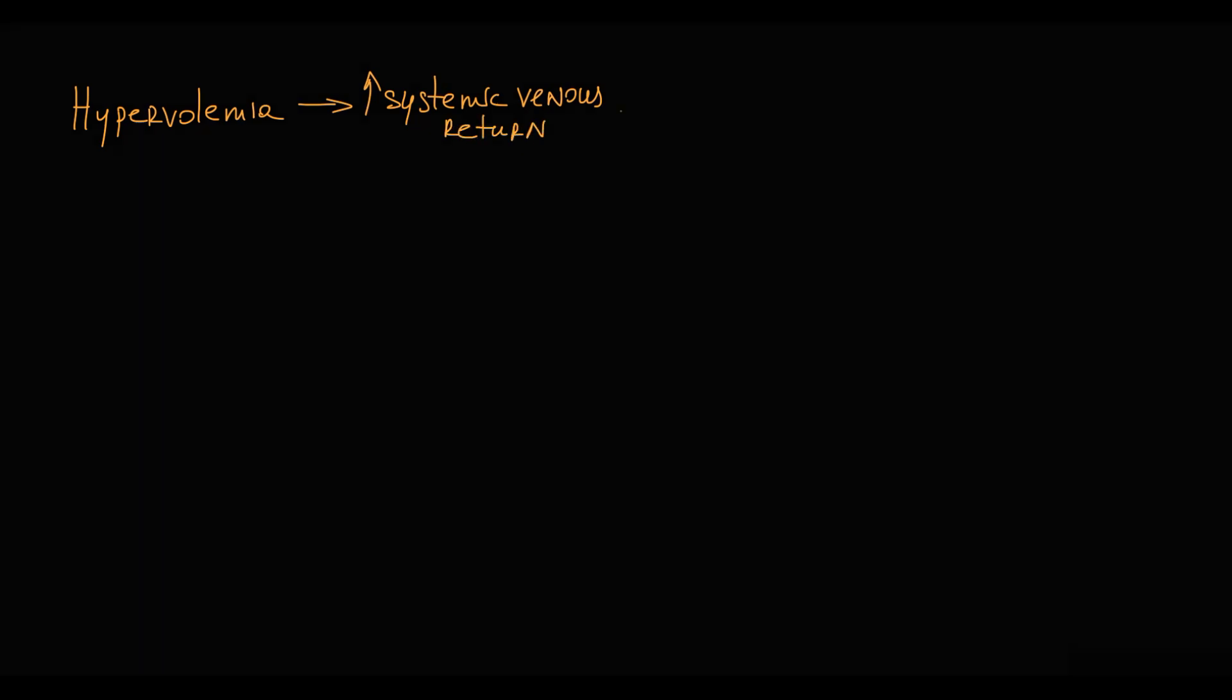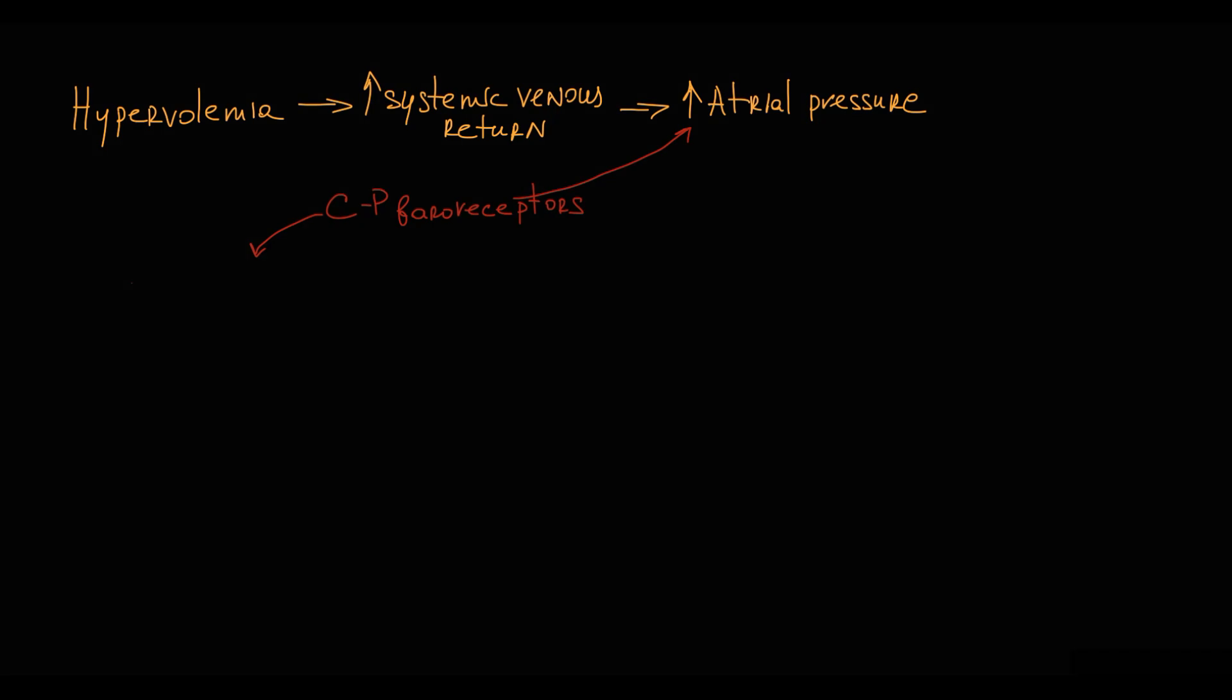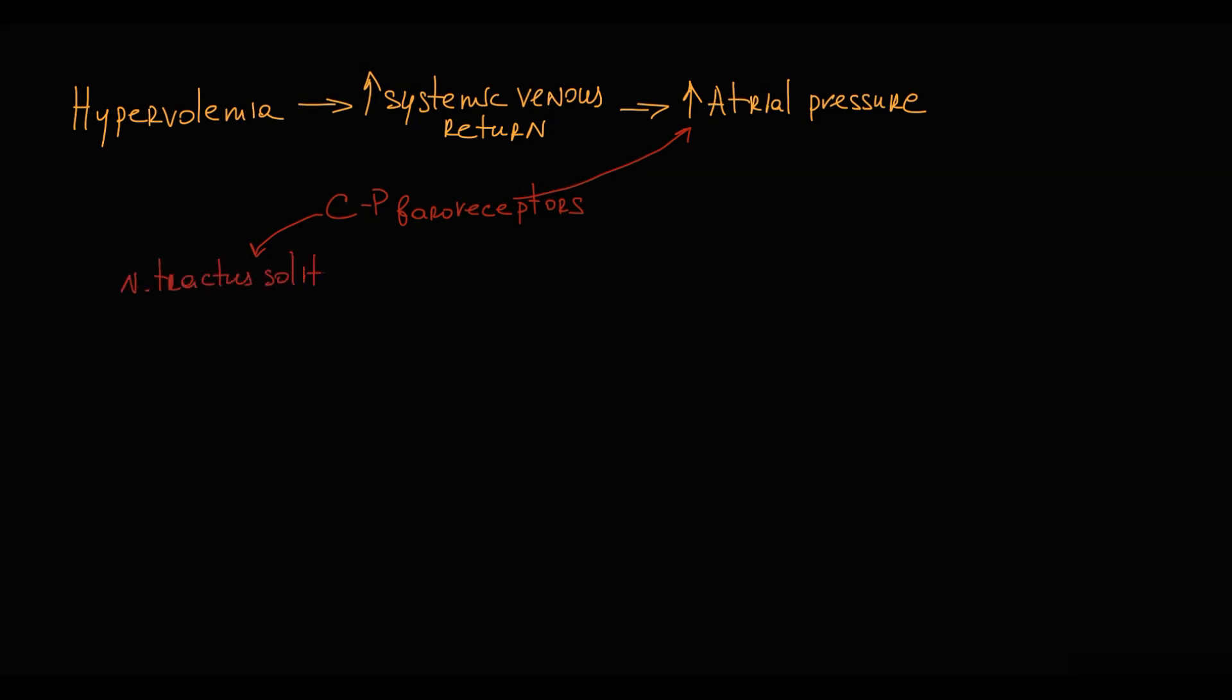The mechanism of Bainbridge reflex is that hypervolemia causes increase in systemic venous return, so more volume of blood occurs at right atrium. It causes increase in atrial pressure, and cardiopulmonary baroreceptors detect this increase in atrial pressure, and by afferent pathways, they send signal to nucleus tractus solitarius, that then directs response through medullary cardiovascular centers.